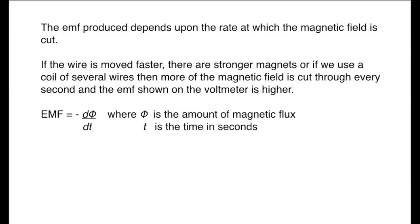The voltage produced, that is the EMF, is equal to the rate of cutting of the magnetic flux. That is written here as dphi by dt, where phi is the amount of magnetic flux and t is the time in seconds.